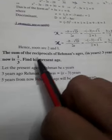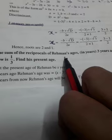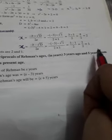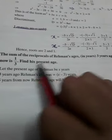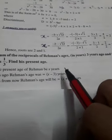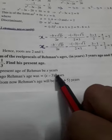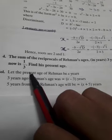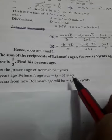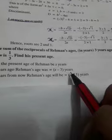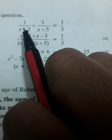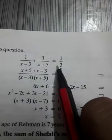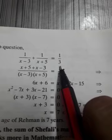As given in the question, the sum of the reciprocals of Rahman's age 3 years ago and 5 years from now is 1 by 3. So the sum of their reciprocals: 1 by (X minus 3) plus 1 by (X plus 5) equals 1 by 3, according to the question.